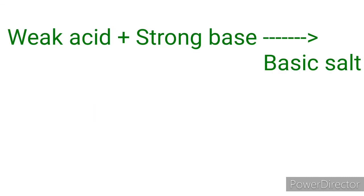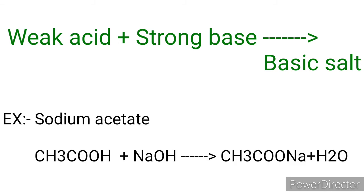The salts of a weak acid and a strong base are basic in nature and the pH value is more than 7. For example, sodium acetate is formed by acetic acid (a weak acid) and sodium hydroxide (a strong base). So, the obtained salt, sodium acetate, is basic in nature and the pH value is more than 7.